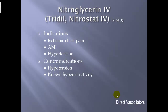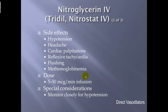Indications: ischemic chest pain, acute myocardial infarction, and hypertension. Contraindications: hypotension and known hypersensitivity. Side effects: hypotension, headache, cardiac palpitations, reflex tachycardia, flushing, and methemoglobin anemia. It is metabolized in a way that increases methemoglobin — a form of hemoglobin that cannot carry oxygen — so at higher doses (upwards of 50–75 mcg/min) we can expect more methemoglobin formation, which is counterproductive. Dose: 5 to 50 micrograms per minute infusion.